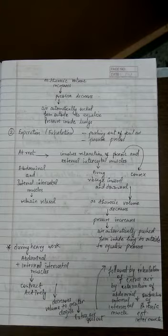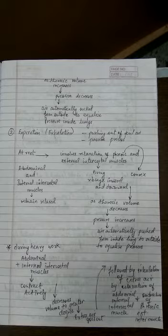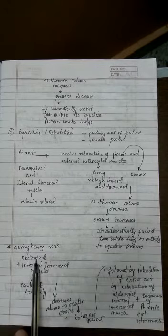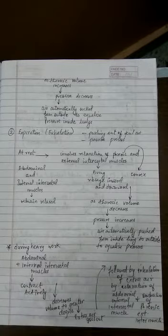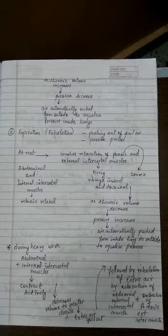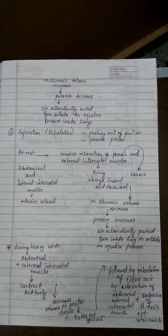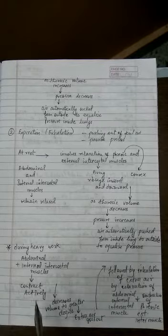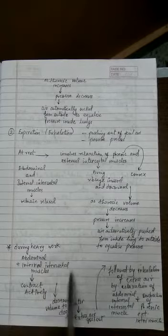During inspiration at resting situation, the internal intercostal muscle and abdominal muscles are relaxed. But in the case of heavy workload, abdominal muscle and internal intercostal muscle undergo contraction, and this contraction ensures more air goes outside so that more fresh air may come inside in the next step of inhalation. During heavy workload, these muscles play crucial role.